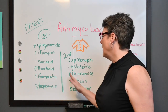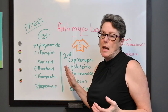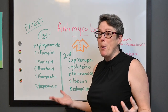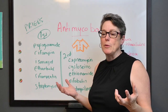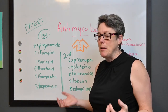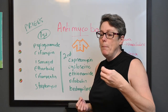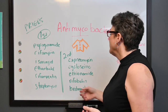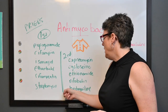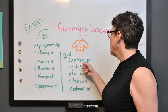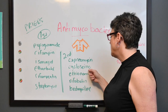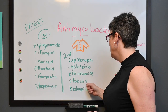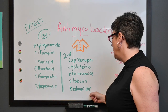For second-line drugs we're going to use the acronym CCERB — with two C's. CERB became popular as a result of COVID; it was funding people received to prevent financial hardship, so we've got double CERB. The second-line drugs are: capreomycin, cycloserine, ethionamide, rifabutin, and bedaquiline.